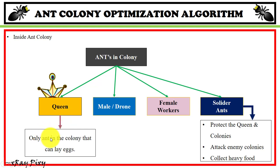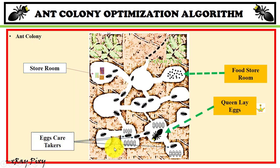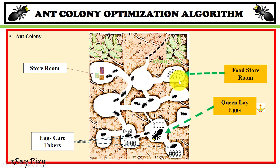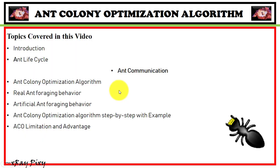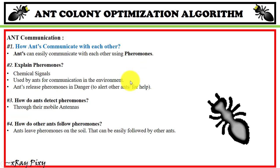The role of the queen in the colony is that she is the only ant that can lay eggs. Inside an ant colony, similar to rooms in a home, there are specific rooms: a store room, a queen room, a food store room, and areas for egg caretakers. You can see the caretakers and ants in the food store room.